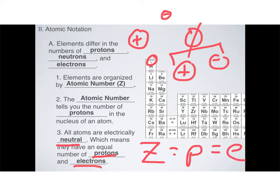All atoms have equal numbers of protons and electrons. So the atomic number, abbreviated Z, gives you the number of protons, and it also gives you the number of electrons — they're equal. You can pick any element on the periodic table. For example, calcium has 20 positively charged things in the center of its nucleus, and also 20 negative things zipping around the outside of the nucleus. You can do that with any element from the periodic table.